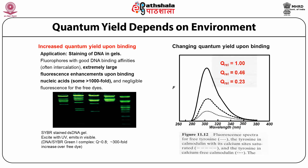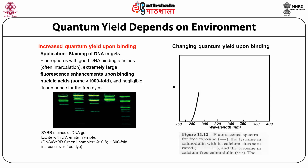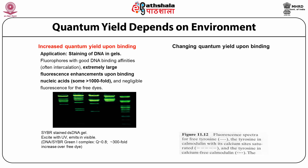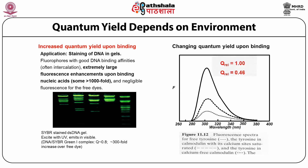You can see the change of quantum yield upon binding. For example, in the fluorescence spectra of free tyrosine, when the tyrosine is bound to calmodulin its quantum yield becomes 0.46, and when the tyrosine is in calcium-free calmodulin its fluorescence intensity further decreases to 0.34.